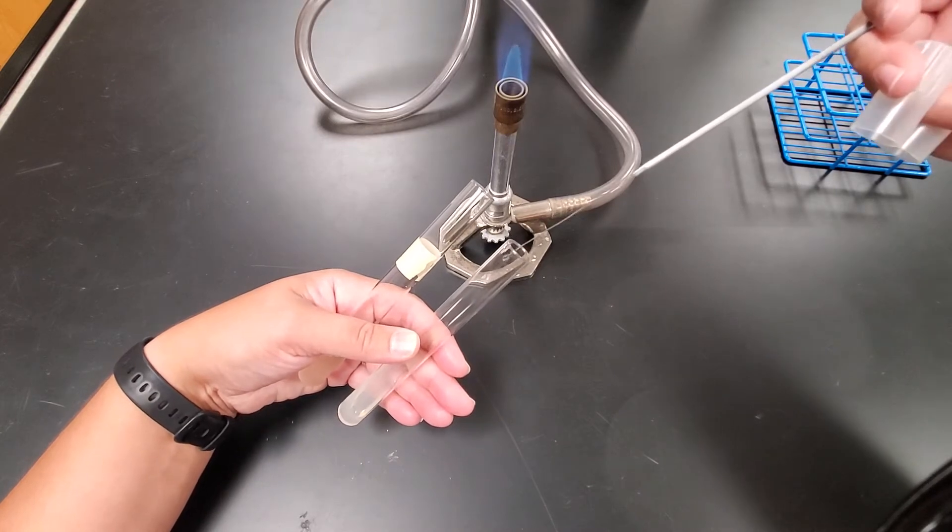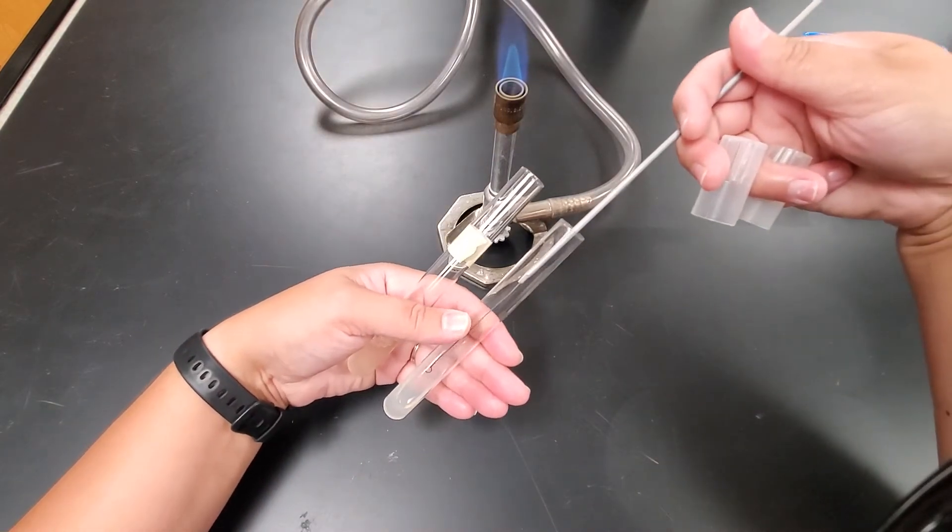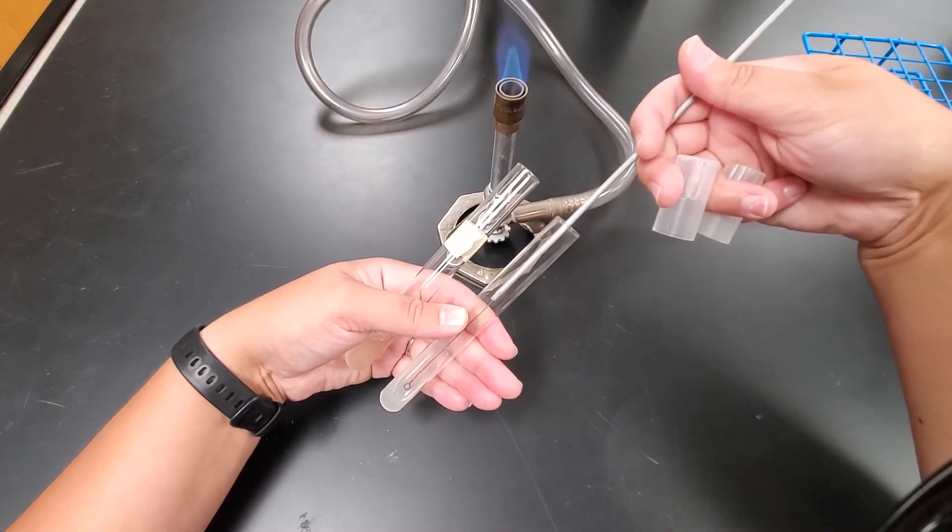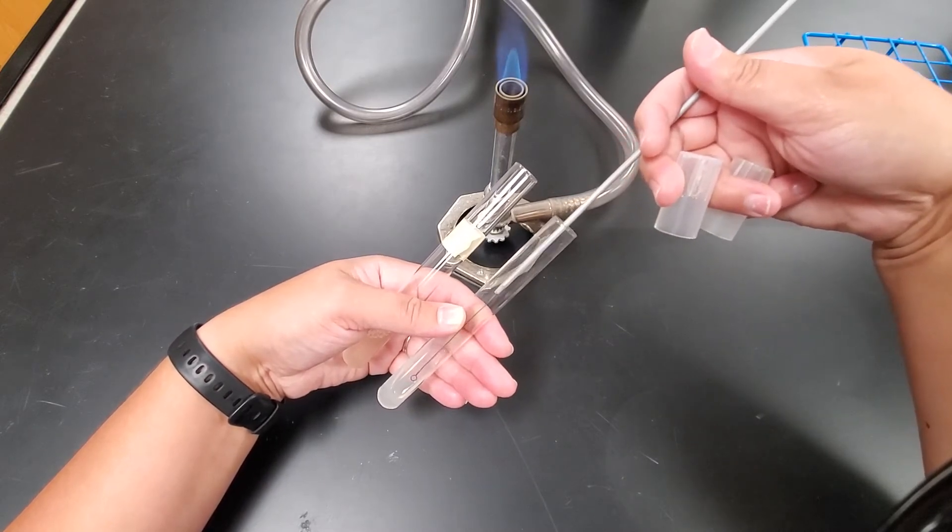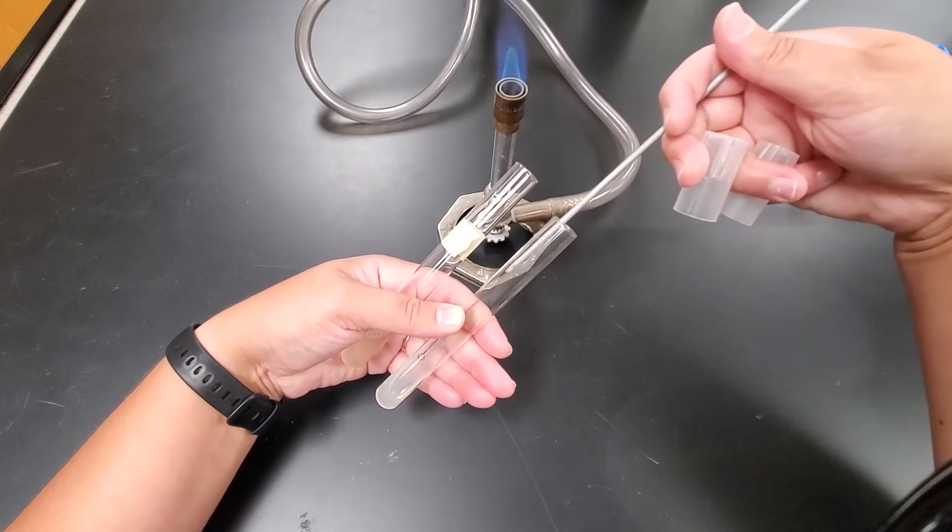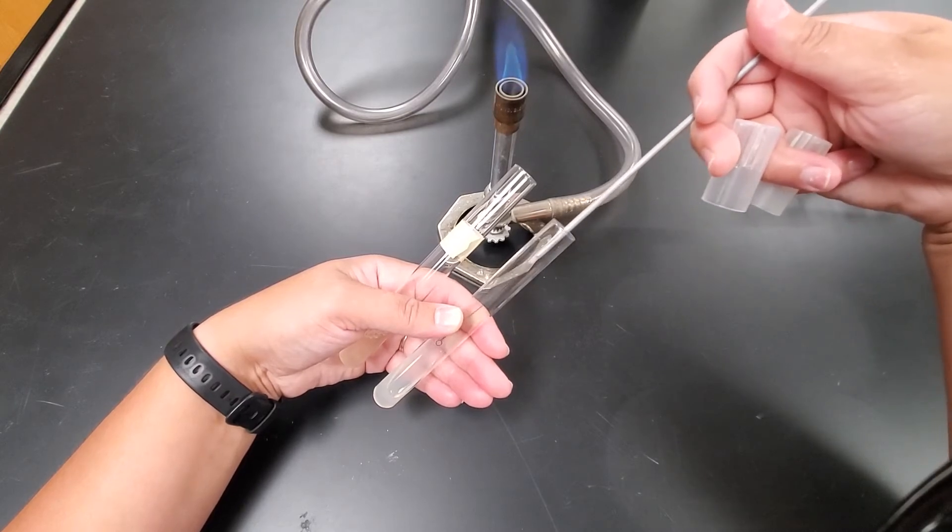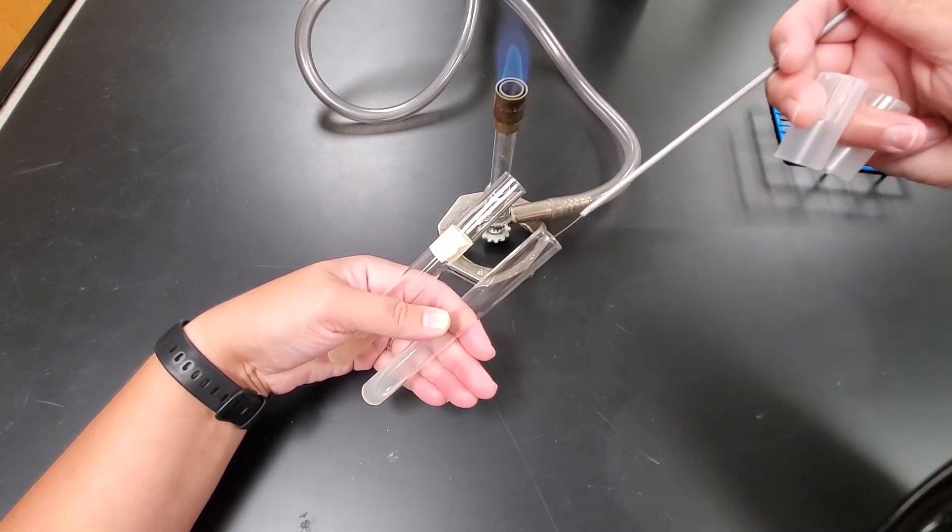So now I want to go into the agar slant, being careful not to touch the sides of the tube. And I want to start at the base and then zigzag my way up. So you can see how I'm zigzagging that sample that I just grabbed. Once I get to the top, I'm going to go ahead and re-flame my loop.